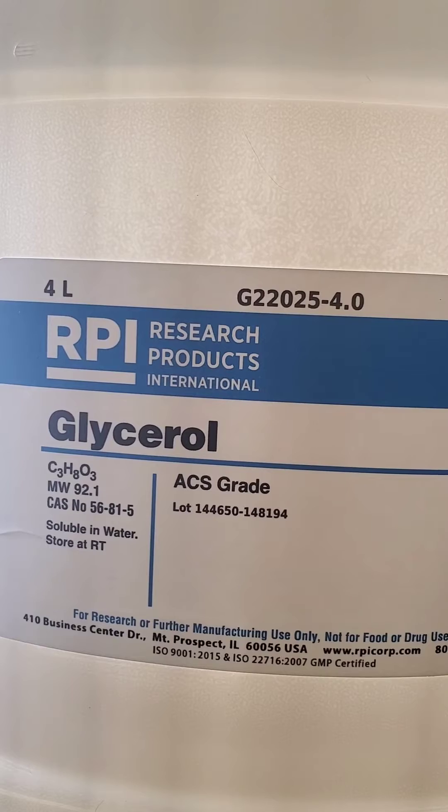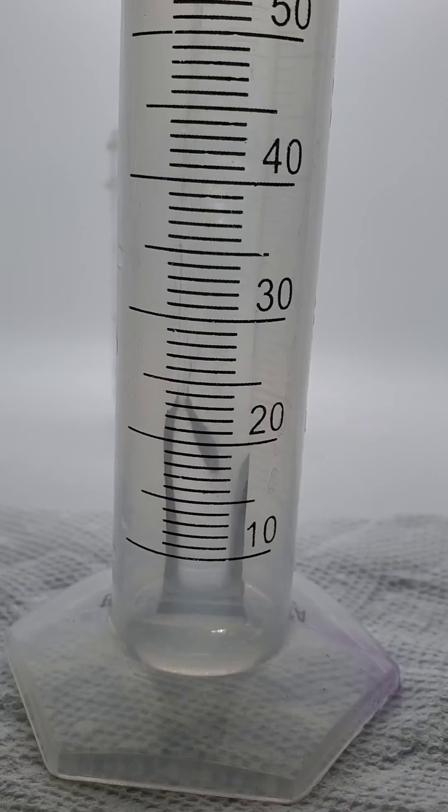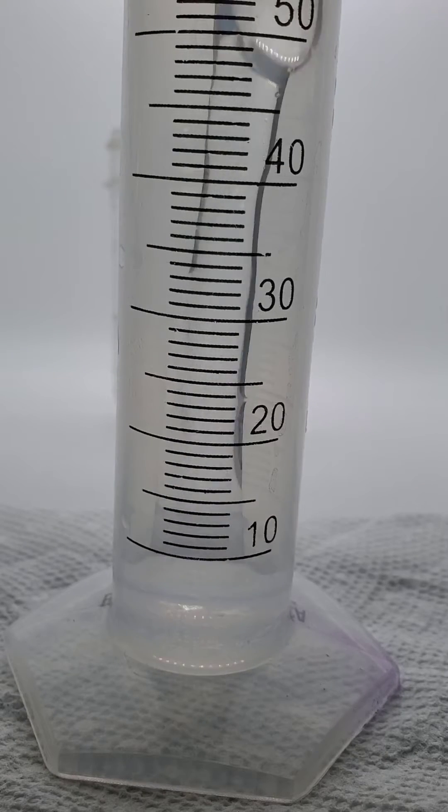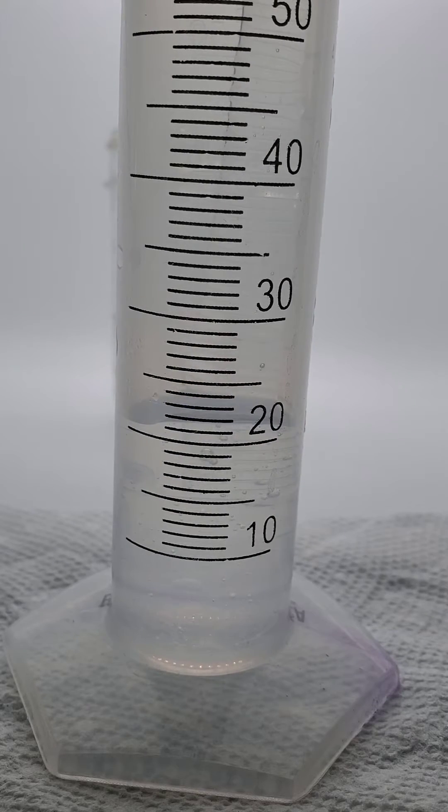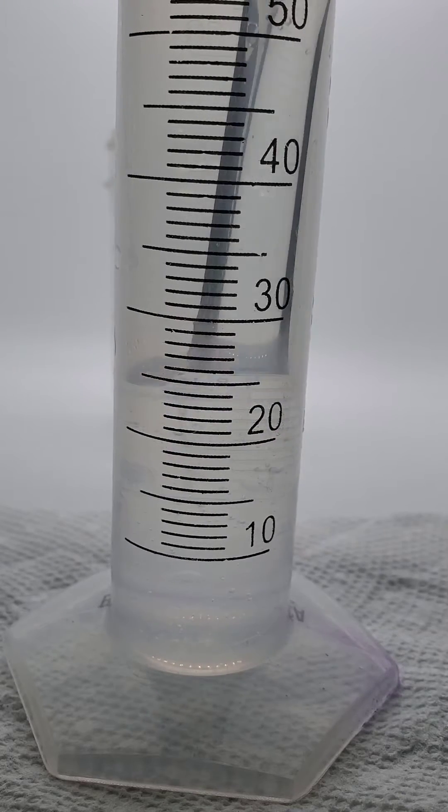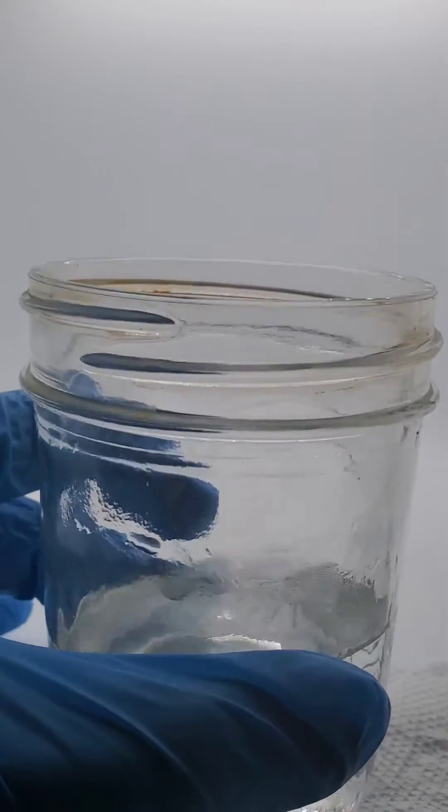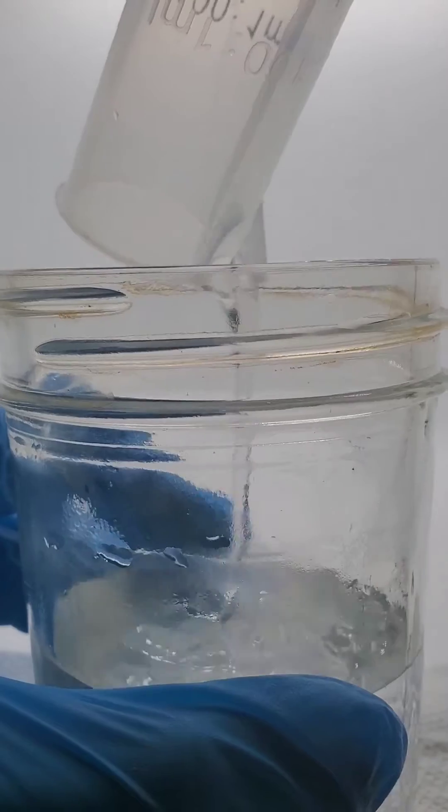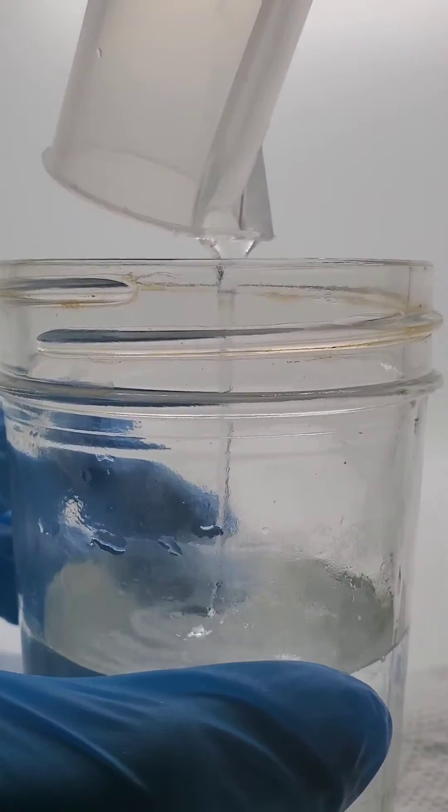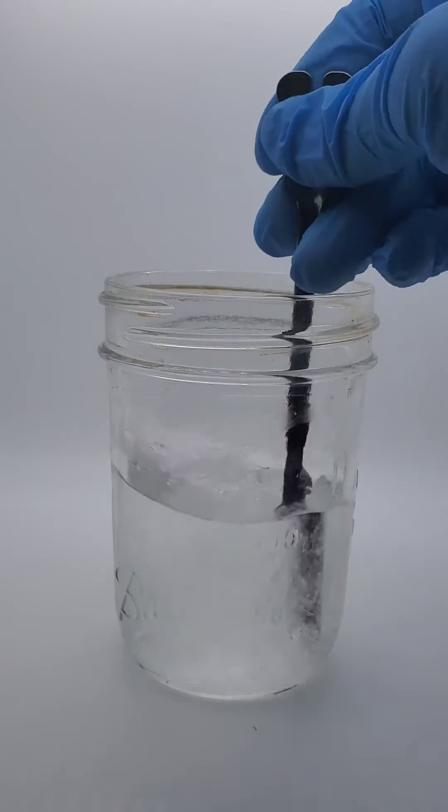And then you'll need your glycerin or glycerol and you'll measure out 25 milliliters. You'll put it into your potassium mixture here and then stir it up.